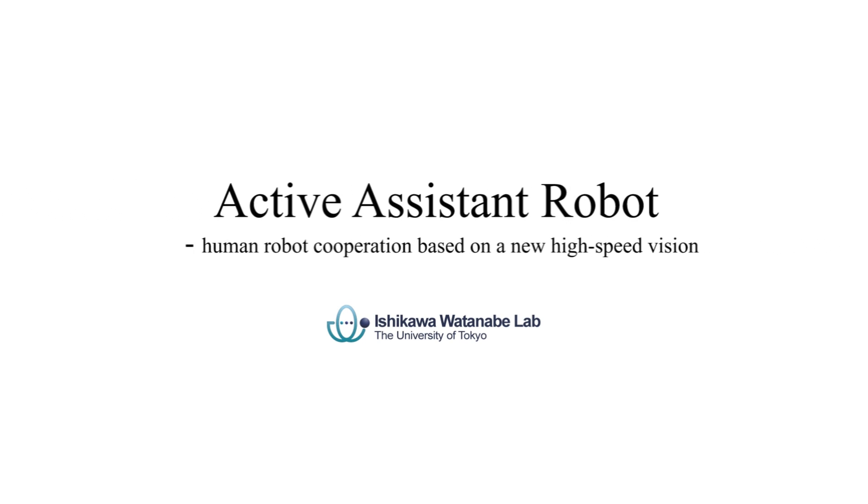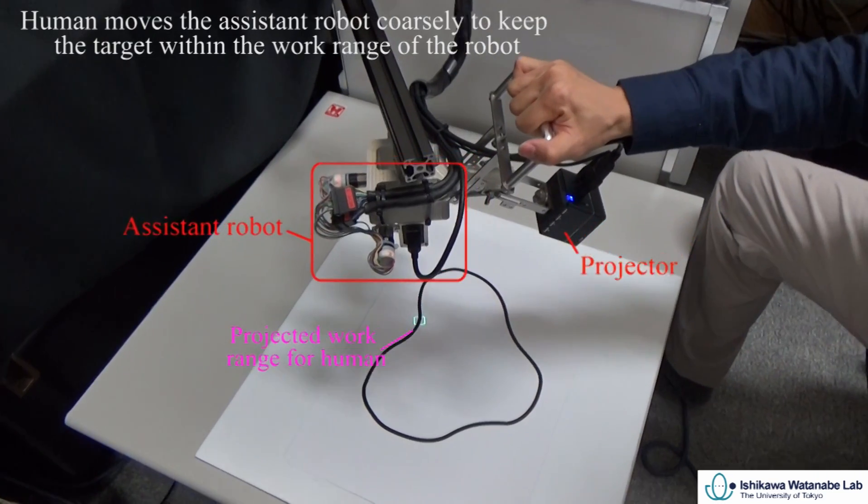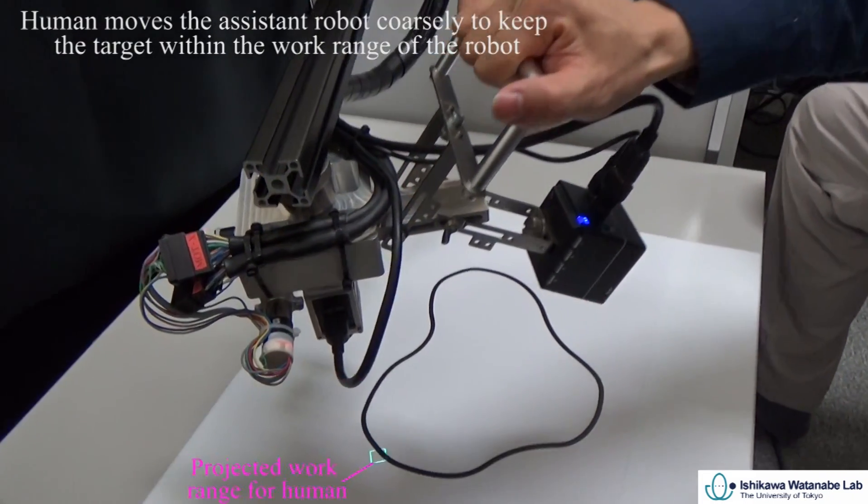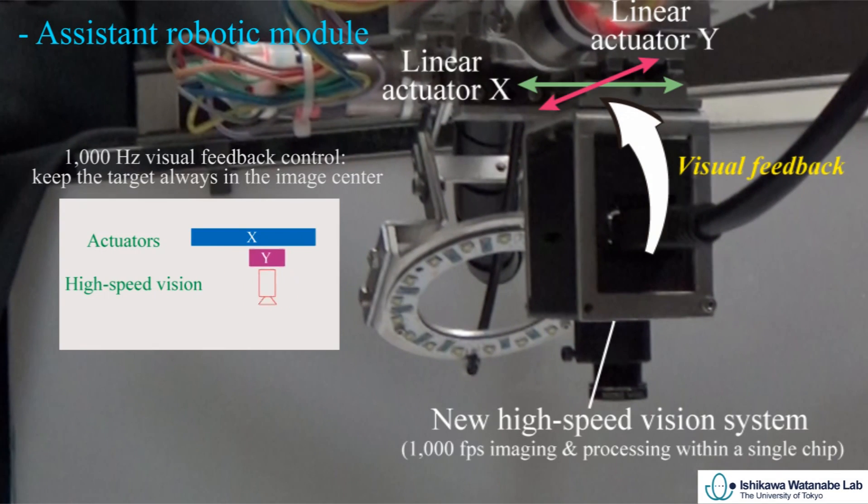We propose an active assistant robot. A projected square area is used as visual indication. The human operator moves the assistant robot to realize coarse global motion while keeping the target within the limited work range of the XY axis robot.